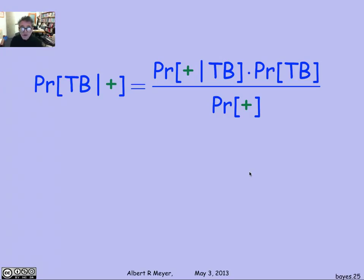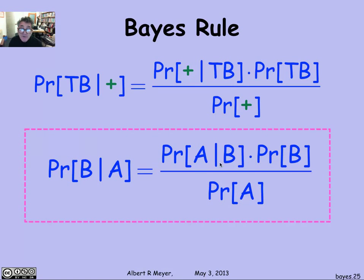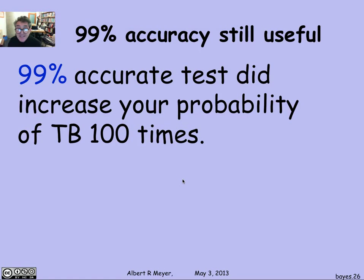The basic formula we used here was figuring out the probability of TB given that the test said you had TB, in terms of the inverse probabilities we knew — that is, the probability that the test came in positive given that you had TB. This was an example of a famous rule in probability theory called Bayes' Rule or Bayes' Law. Stated in terms of arbitrary events A and B, it expresses the probability of B given A in terms of the probability of A given B, and the probabilities of A and B independently. I can never remember this law, but I re-derive it every time as we've done here — it's a quite straightforward law to derive and prove.